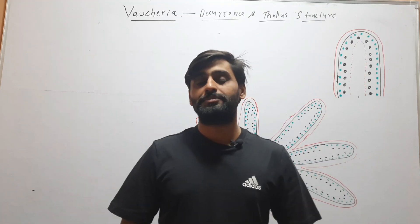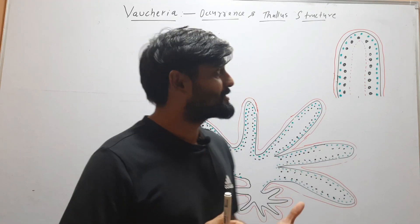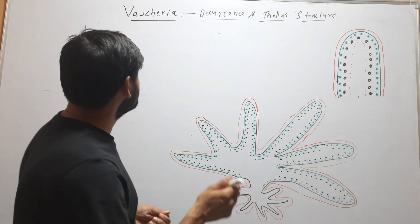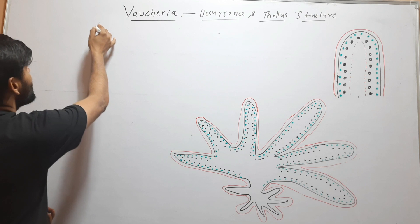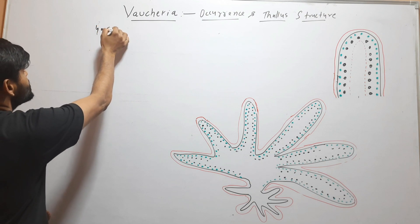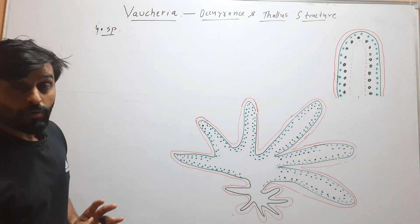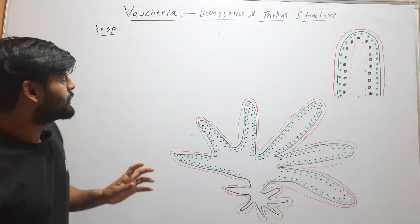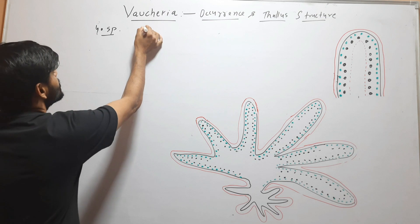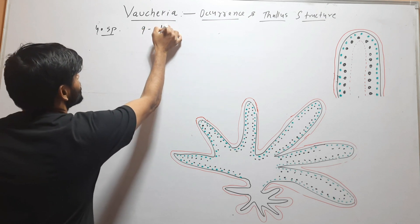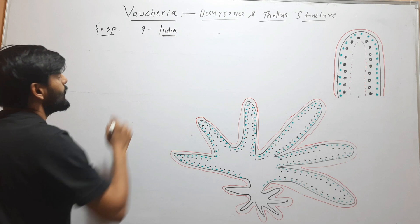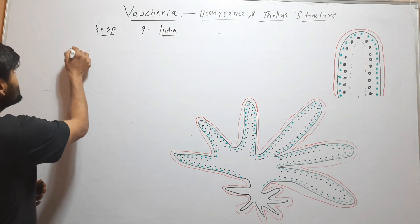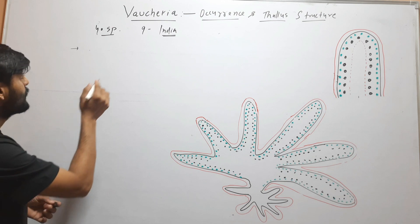Hello friends, welcome to my YouTube channel. In this video we will discuss Vaucheria, its occurrence and thallus structure. Vaucheria is a genus which has 40 species across the globe. Out of 40 species, nine are from India, so nine species of Vaucheria are found in India.